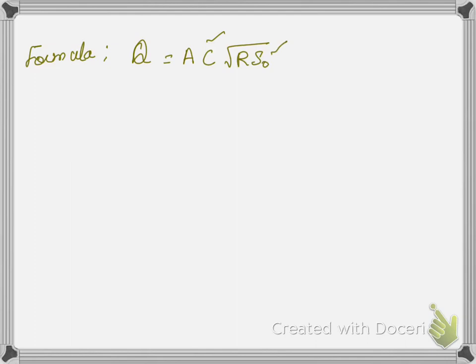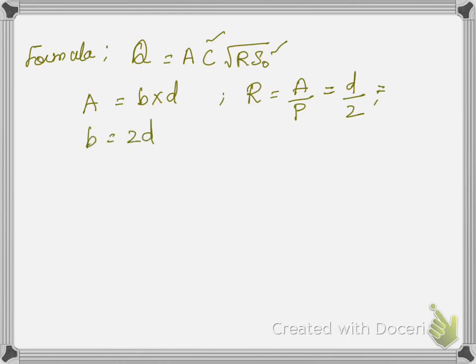To get the value of A we use the formula b times d. To get the value of r, since the channel is economical, we use r equals d by 2. To get the value of d, we use the condition b equals 2d, so d equals b by 2. These are the formulas we are going to use.